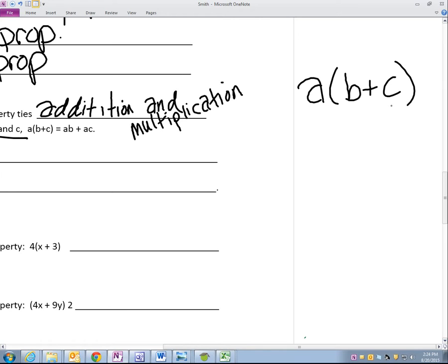This A in this situation needs to be distributed to both of the B and the C. Whenever we don't have a symbol here, what symbol is inferred? Multiplication. Multiplication. Thank you for not saying timesing. I'm sure you almost started to say it, but everyone else is multiplication.